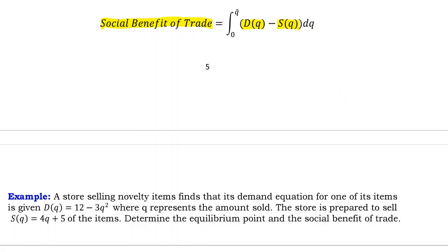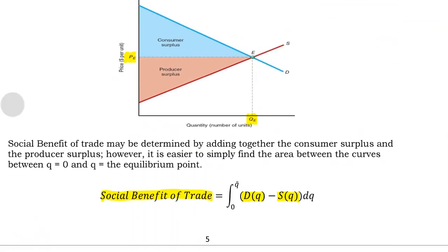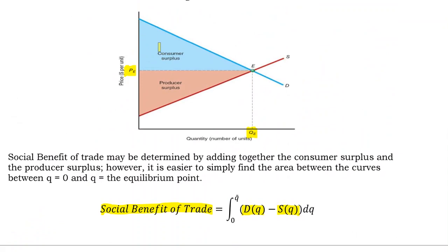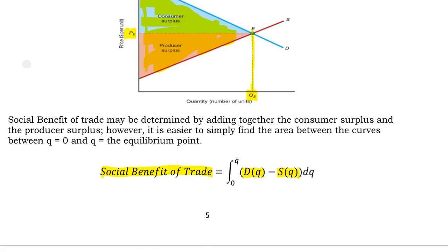The reason for that is if we go back to this graph here, the total gains from trade or social benefit is the total blue area and the brown area. Well, that is simply the area between these two curves. That is all of this area in here between zero and Q. So all we have to do is find the area between two curves.